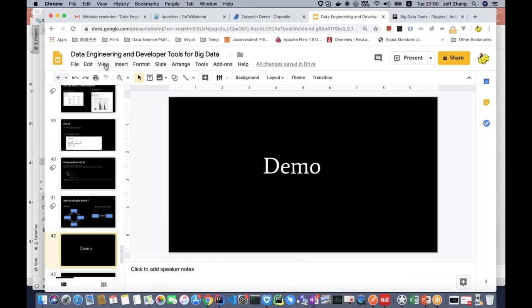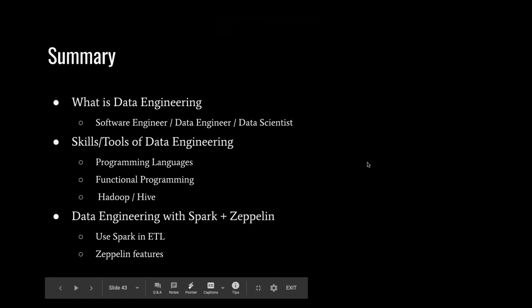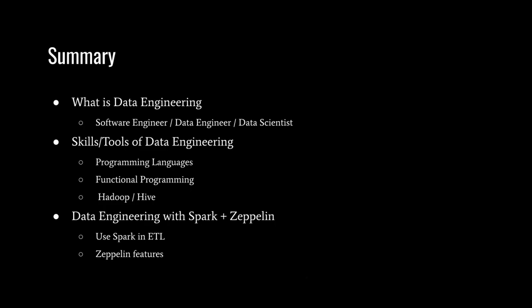Now let's get back to the summary of today's webinar. Today we first talked about what is data engineering — the separation between software engineer, data engineer, and data scientist and what the differences are between these three roles. In the second part we talked about the skills and tools of data engineering, especially programming languages, functional programming which is very suitable for data engineering, and we introduced Hadoop, Hive, and Spark, which are widely used in data engineering.